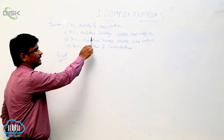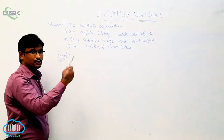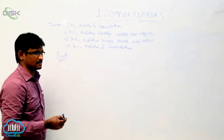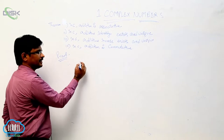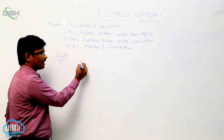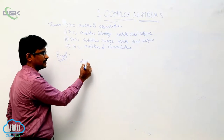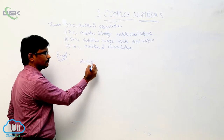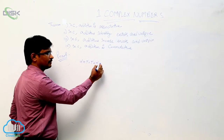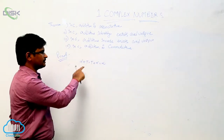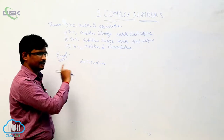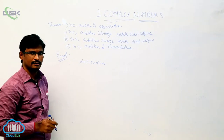Now we proved the identity property. We had to show its uniqueness. By the identity property we have alpha plus t equal to t plus alpha equal to alpha, where t is called the additive identity of alpha.